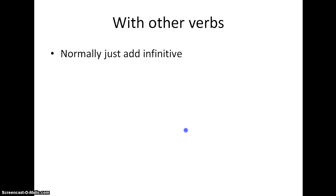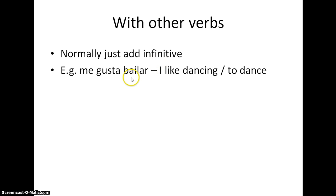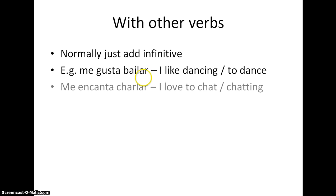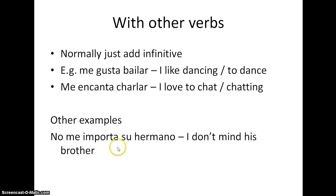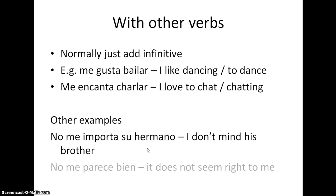Normally after these verbs we just add an infinitive. So 'me gusta bailar' — I like dancing, or I like to dance. We know this is an infinitive because it ends in AR. Remember all infinitives end in AR, ER, or IR. 'Me encanta charlar' — so 'encantar' is another impersonal verb — I love to chat or I love chatting. Other examples: 'no me importa su hermano' — I don't mind his brother (literally: he is not minding to me). 'No me parece bien' — it doesn't seem right to me (literally: it is not seeming right to me).